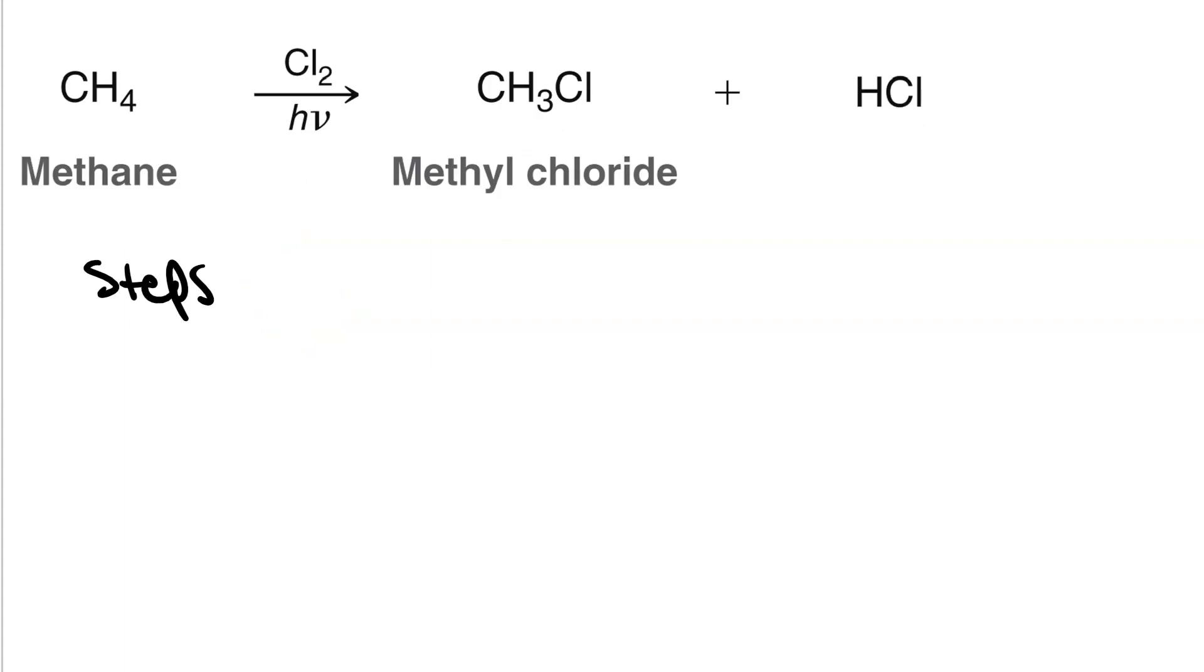Let's look at the steps. In our initiation step, ultraviolet light supplies enough energy to the Cl-Cl bond that it cleaves homolytically. This creates two chlorine radicals.